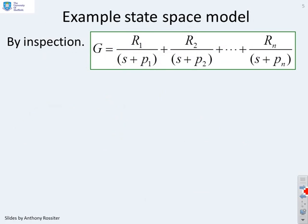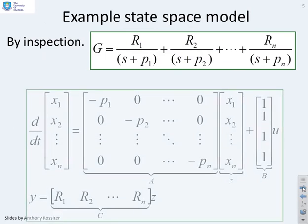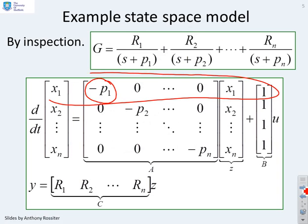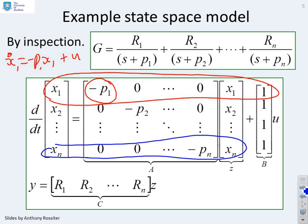Let's do an example then. Here's a partial fraction R1 to Rn and you'll see the state space model. I'm going to put minus P1 in the 1,1 position and you'll notice the top row here. That top row captures x1 dot equals minus P1 x1 plus u. Now if I look, for example, at the nth row, so I'll put this nth row down there, what equation has been captured by that nth row?